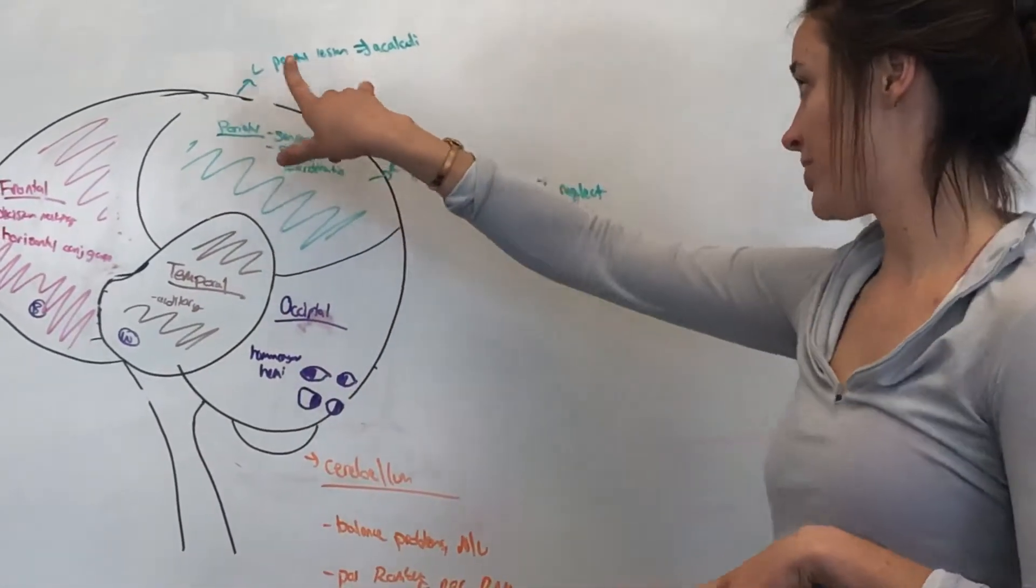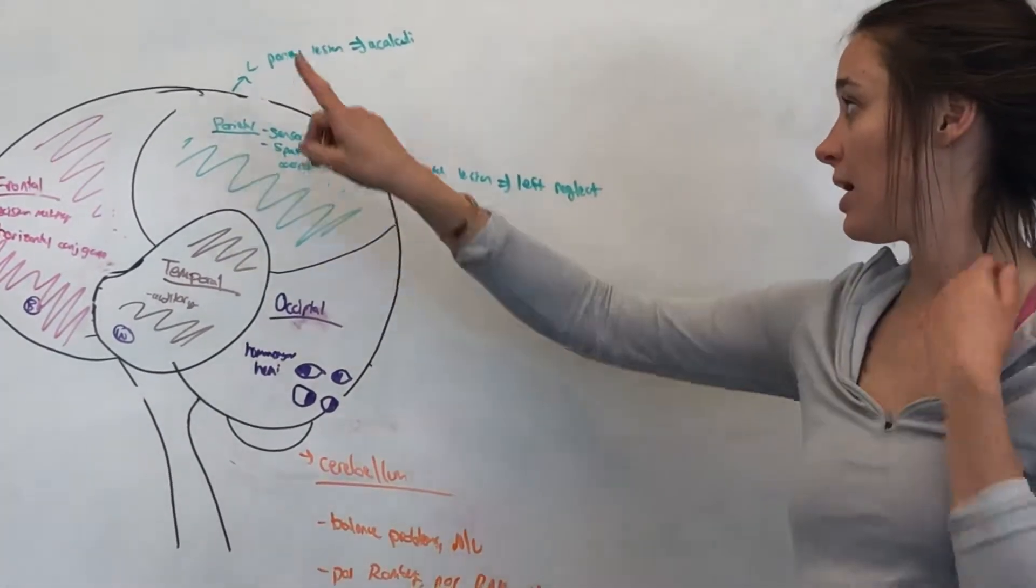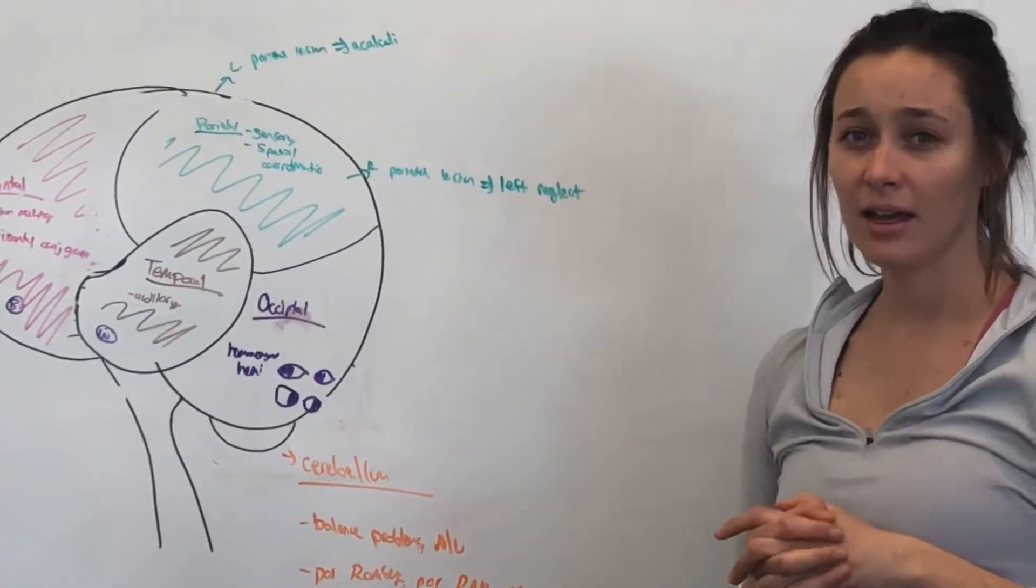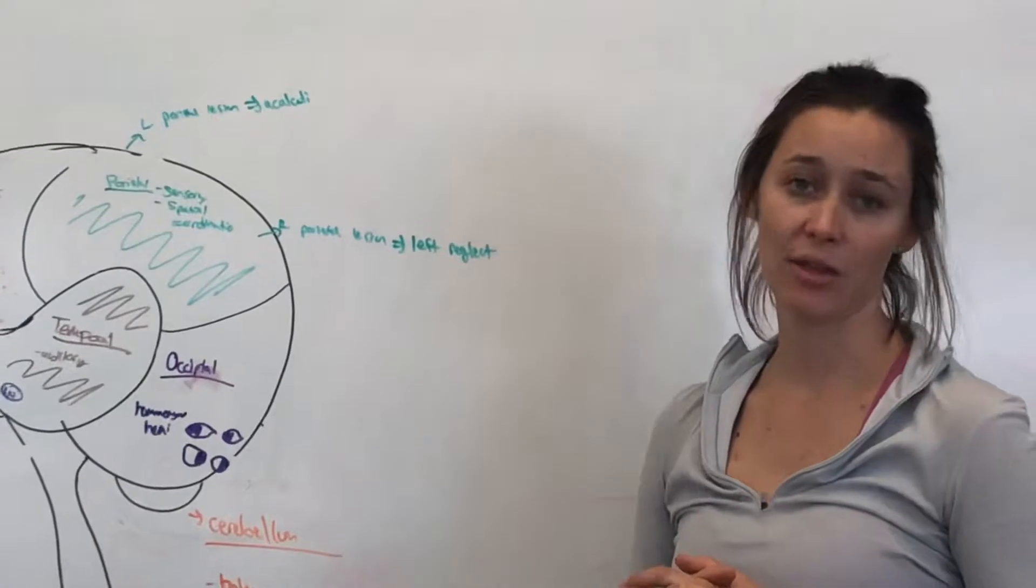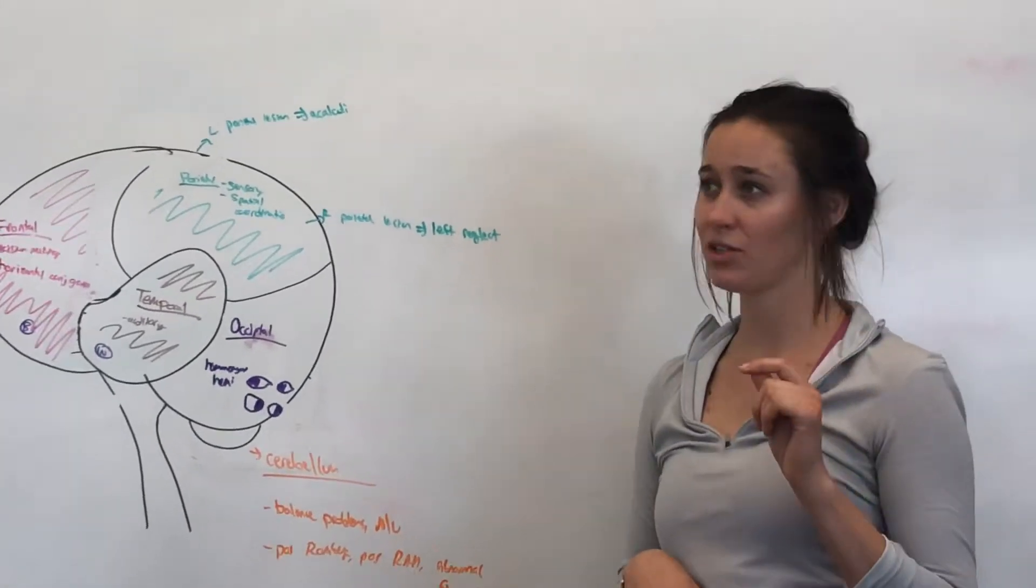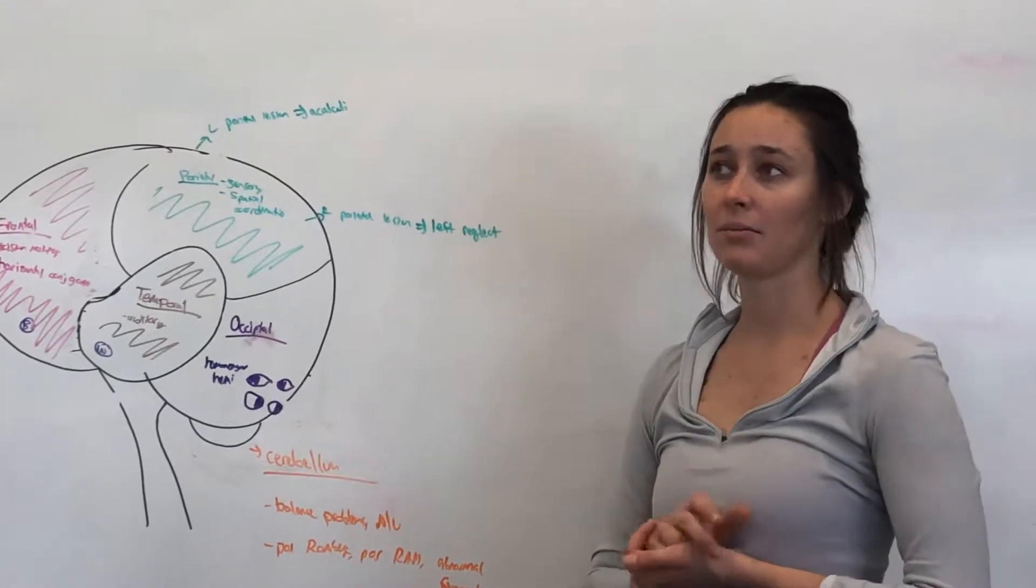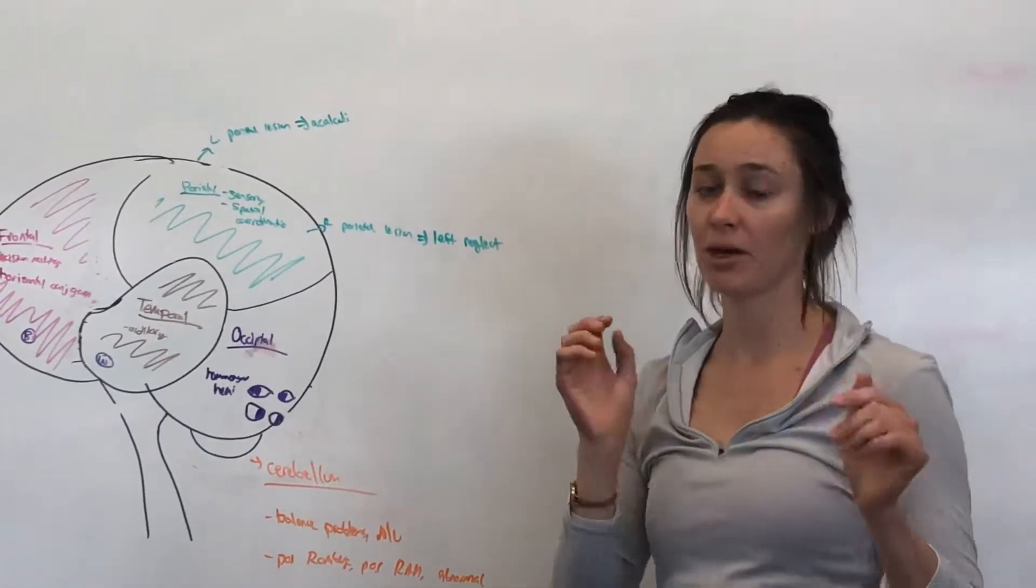So to move along to the deficits or strokes, we'll see if you have a left parietal deficit, you're going to have acalculia, so the inability to do math. So remember, people who are left-handed can't do math. There's a lot of other ones, but that's just kind of an easy question, kind of keyword, acalculia, left parietal lesion.